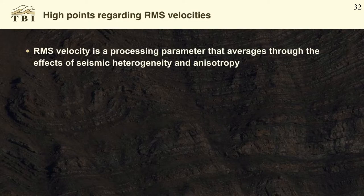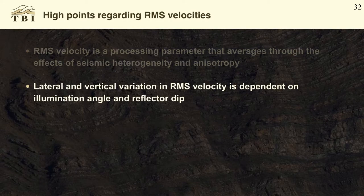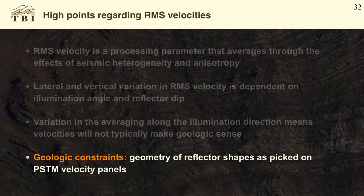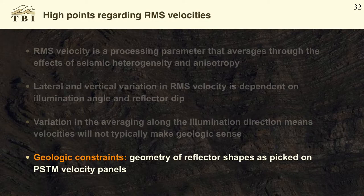Key points regarding RMS velocities: RMS velocity is a processing parameter that averages through effects of seismic heterogeneity and anisotropy — it's unfortunate we call it velocity, because it's not really a rock physics parameter. Lateral and vertical variation in RMS velocity is dependent on illumination angle and reflector dip, so it often doesn't make geologic sense. However, we can use geologic constraints when picking RMS velocities — the geometry of reflector shapes on the velocity panels should make geologic sense. We'll often pick two scenarios, slightly higher or lower RMS velocities, to see which makes more sense for the subsurface structure geometry.